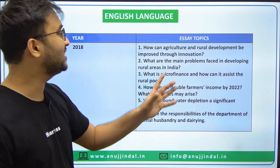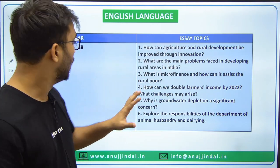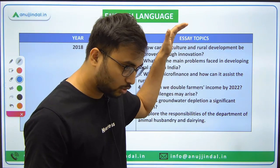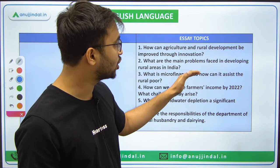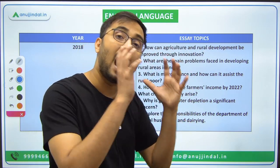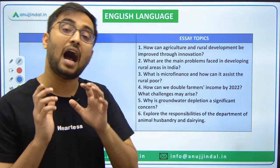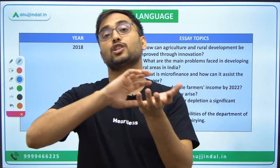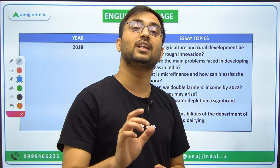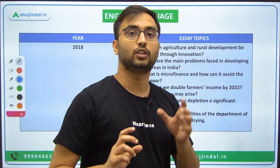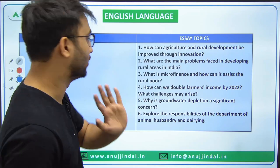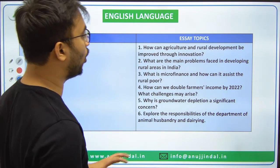Let's start Phase 2 trend analysis with Paper 1, General English, beginning with the Essay section. We will cover topics section by section and understand how the exam pattern has changed — how the way questions are asked has changed, the tone of the questions, and what the overall analysis reveals throughout the years.